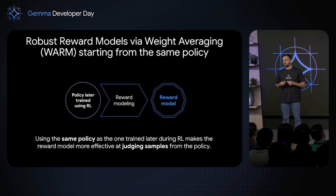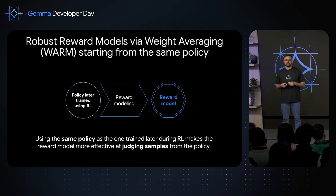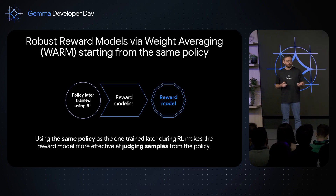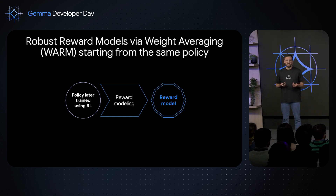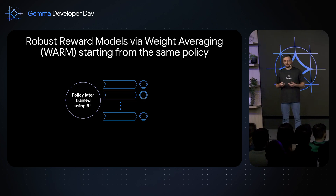As it turns out, the most effective solution was to use the same policy that you will later train in RL. You take the same pre-trained model, turn it into a reward model, and then use that reward model to train the same policy. The intuition is that using the same policy makes the reward model more effective at judging samples from the policy, because you're much more in-distribution with respect to the policy you'll train later on. The second item we can address is the reward modeling itself — how it can be hacked. It picks up certain quirks in your data, and you can easily fool it by, for instance, making sentences way too long. The solution: instead of training one reward model, train an ensemble, making it much harder for the policy to fool every single reward model at once, since they pick up different quirks and have different ways to be hacked.